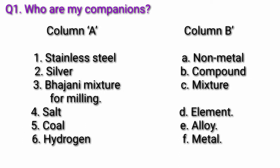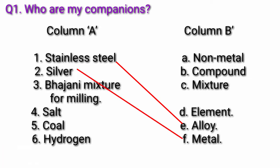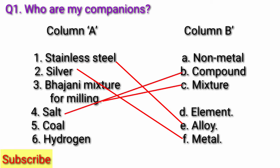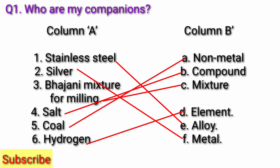Answer. Stainless steel - alloy. Second, silver - metal. Three, bhajni mixture for milling - mixture. Four, salt - compound. Five, coal - non-metal. Six, hydrogen - element.